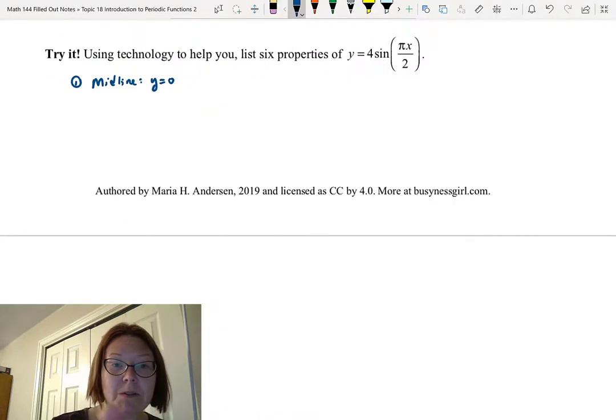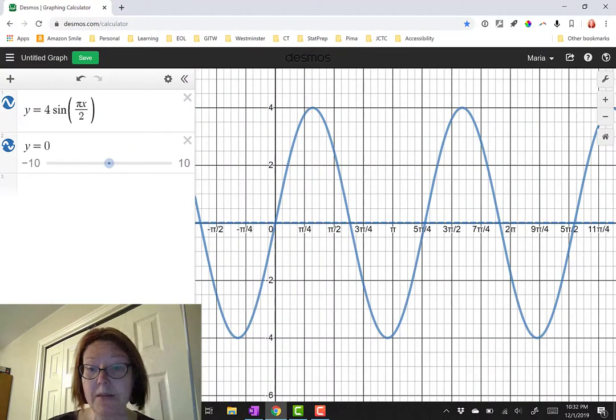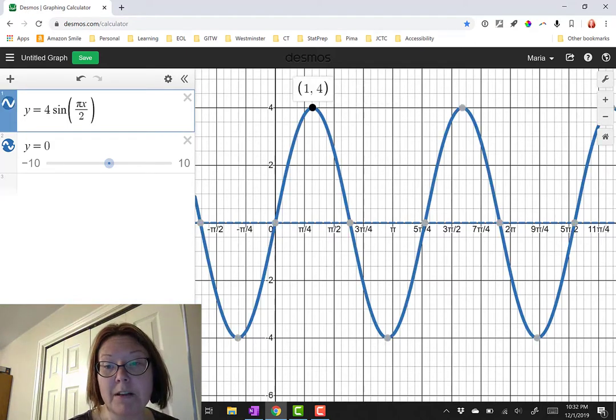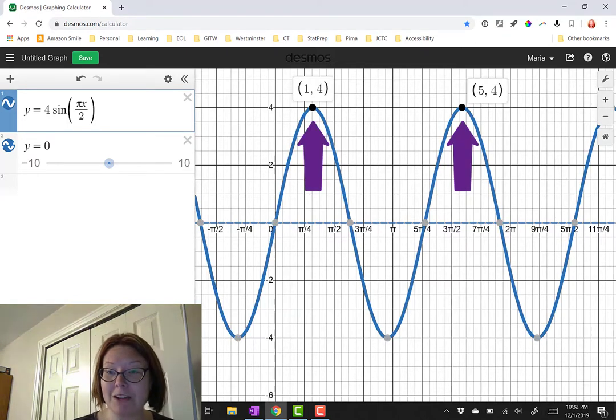So the amplitude is 4. The period would be going from the maximum to the maximum. Again, if I plot those points, 1, 4 and 5, 4, the horizontal distance between those would be 5 minus 1 or 4 units.